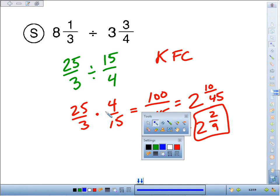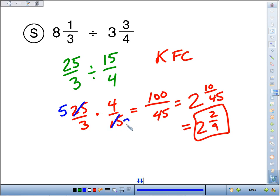Now, we could have reduced a little earlier. We notice 25 and 15 in the numerator and denominator. You could divide both by 5 to get 5 and 3.